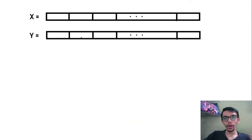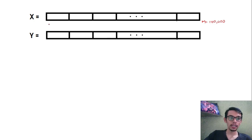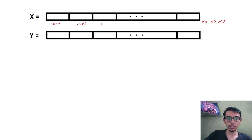The way mini batch gradient descent works is that we divide the entire dataset of size m — let's say 100,000 — into many mini batches. For example, one mini batch can have 1,000 data points, another mini batch with 1,000 data points, and so on, giving us a total of 100 mini batches.